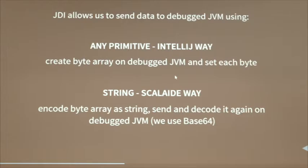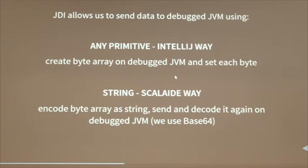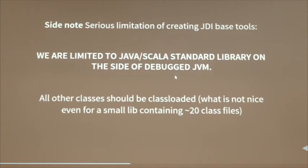We read the file and get the byte array from the required class. Now we have to send this to the debug machine. JDI allows us to send data to the debug machine using two techniques: using primitives and using strings — creating mirrors of some type. IntelliJ also supports lambdas and sends class bytes by creating a byte array and setting each byte separately, but that seemed tedious. We can also create a mirror of any string — so I can send the whole class at once by translating my bytes to a string using Base64.